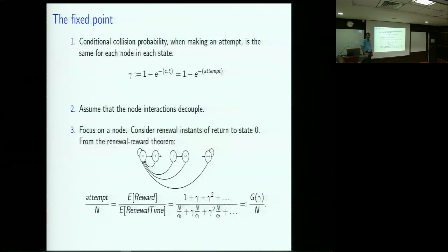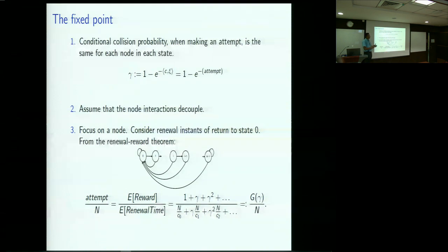Once I get this collision probability, I have a relationship between attempt and collision probability. But I can also find a relationship between collision probability and attempt, and if I do that I have an equation of the form where attempt equals some function of attempt — that's the fixed point. Alternatively, collision equals some function of collision.